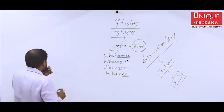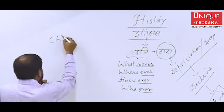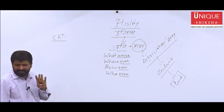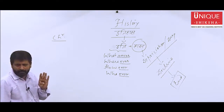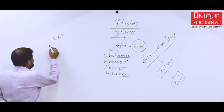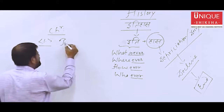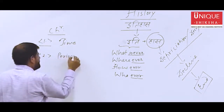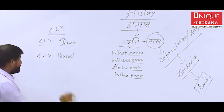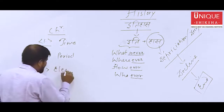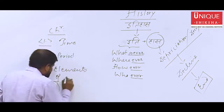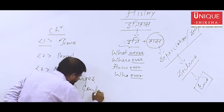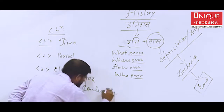Now this history has certain characteristics. No need to write — just try to understand. Number one characteristic: history is characterized by time. Number two: history is characterized by period. And number three: there are always elements of changes and continuity.